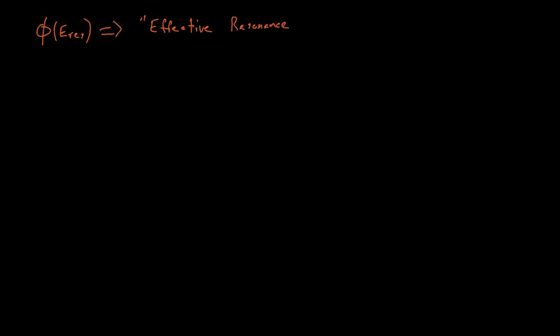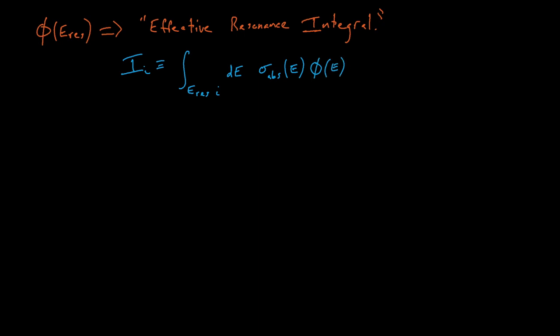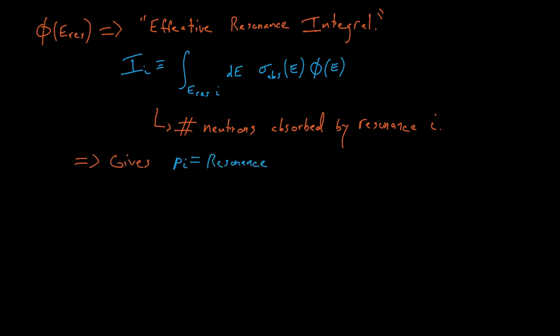So what do we do now that we know the flux around these resonances? We can use these resonance energy fluxes to compute the effective resonance integral for each resonance — which is just the number of neutrons absorbed by each resonance while they're slowing down. From here, we can use these resonance integrals to determine the resonance escape probability for each resonance, denoted Pi, which is the probability that slowing down neutrons are not absorbed by the resonance. We'll talk about this resonance escape probability more later.